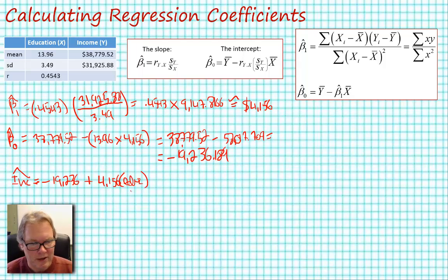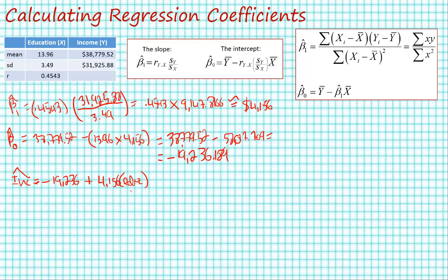We can go ahead and calculate predicted values based on this model. So let's go ahead and calculate two predicted values. I'm going to calculate a y hat, so the hat again says an estimate of y conditional upon x being equal to 10, and that's going to be minus $19,236 plus $4,156